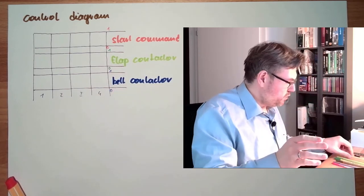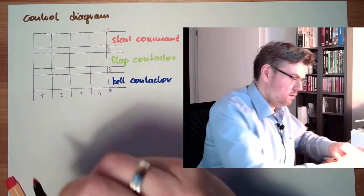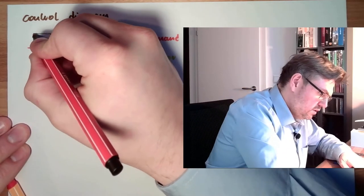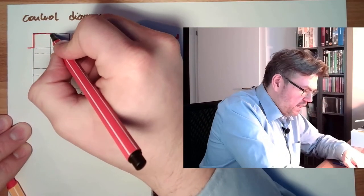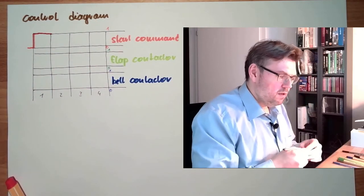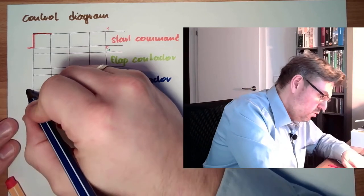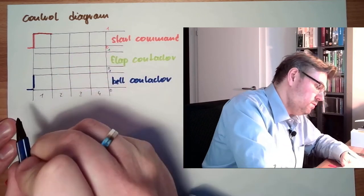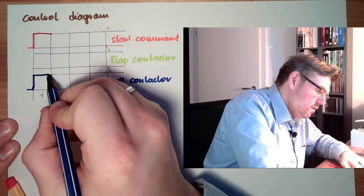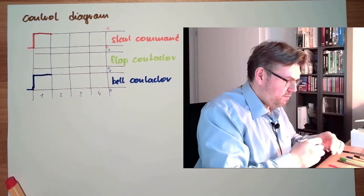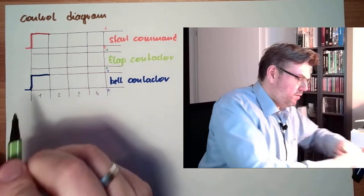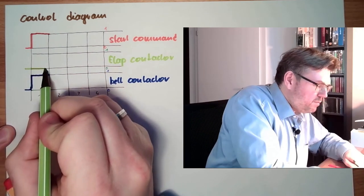First thing which is appearing is the start command. So the start command changes to one. What shall change with the start command? The belt shall change. The belt shall start. So we need to start the belt. First step. The flap shall not do anything. So the command for the flap stays zero.